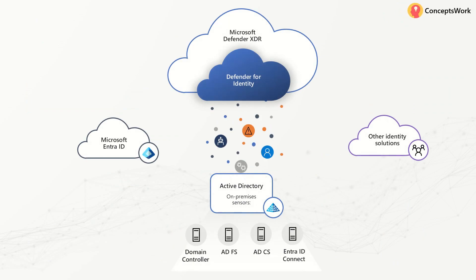If you go ahead and read any public documentation available for Microsoft Defender for Identity, this is how they show the current architecture — wherein information from your on-prem environment is captured through sensors. This information is also correlated with Entra ID to ensure that if there's a fishy activity happening in your on-prem environment with a specific account, and similarly there are brute force attempts happening with that account through Entra ID, it can be correlated and identity insights can be tracked from other identity security solutions as well.